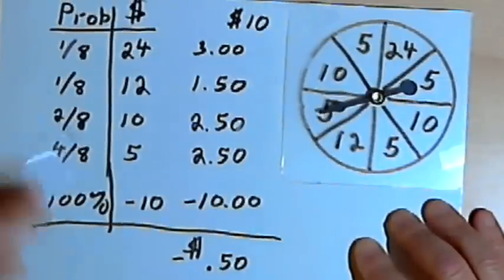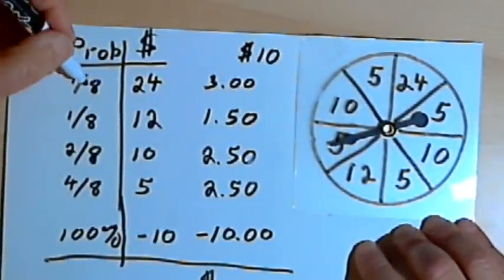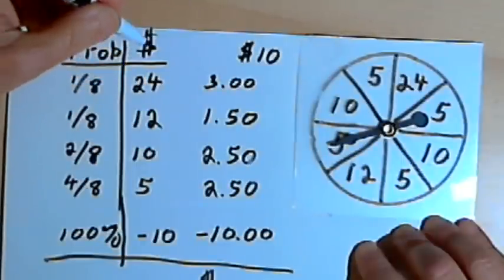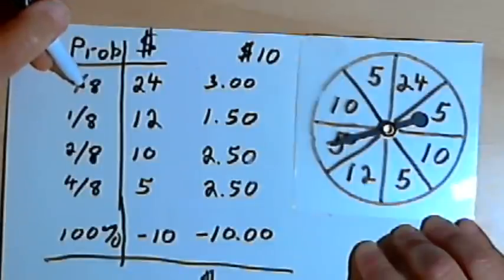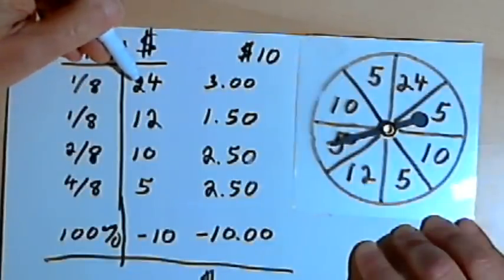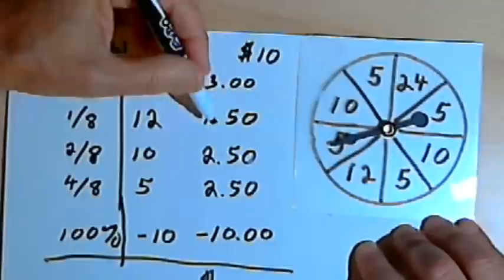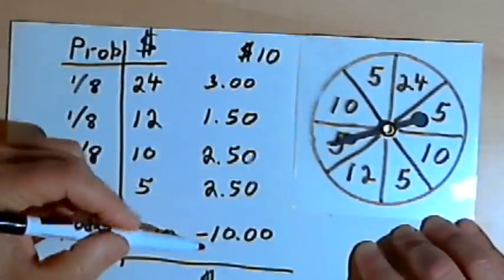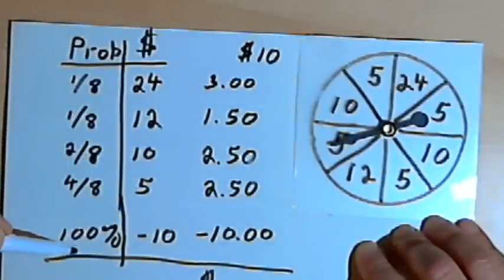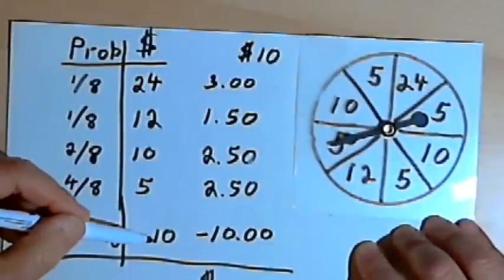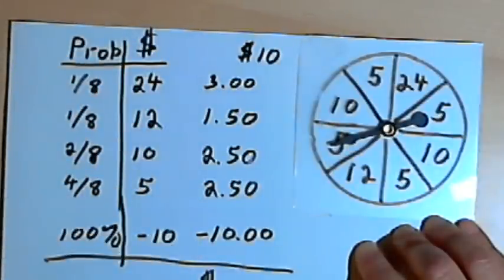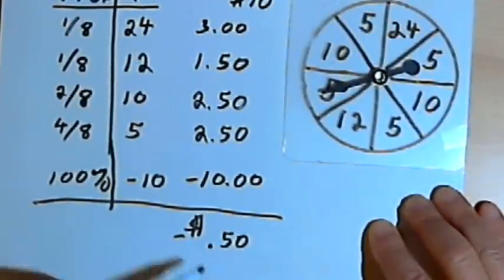So let's review what we did again. Basically, we take the probability for each outcome. The outcome has to do with, in this case, how much money we would get. We multiply that probability times that outcome and record that answer. We do that for each of the probabilities and each of the outcomes. We add all that together and we include the probability, the 100% probability, that we're going to pay ten dollars. When we add all that up, both the money that we're going to get back and the money we've paid, we find out whether our expected value for playing this game is positive or negative, and how much it is.